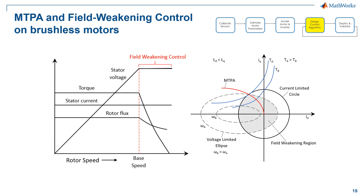We manipulate the D-axis stator current to be a negative value, which means we reduce the field current so that the applied stator magnetic field is in the opposite direction to the rotor magnetic field. As a result, the net magnetic field is reduced, the back-EMF is reduced, and so is the rotor flux linkage, which allows the motor to run above the base speed.